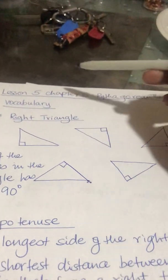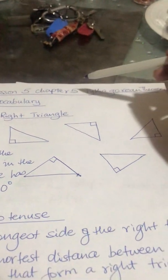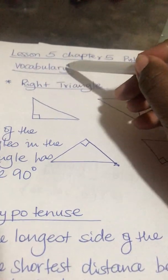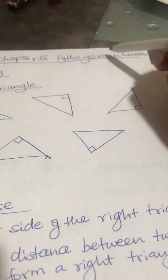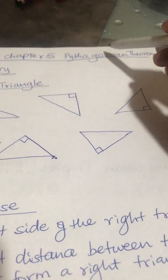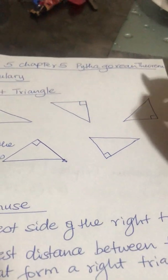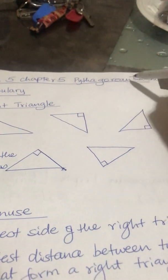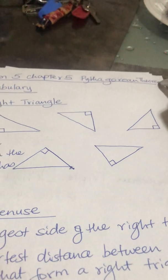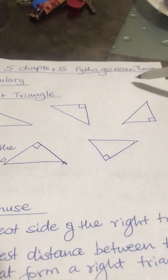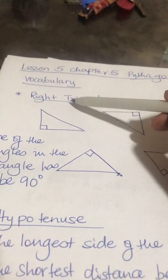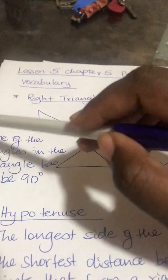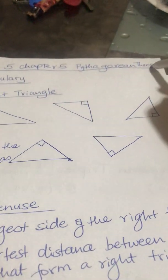Okay girls, lesson five, chapter five: Pythagorean theorem. We need to know the vocabulary. The Pythagorean theorem comes from the Greek mathematician Pythagoras, so he's the one who developed it. When you see the Pythagorean theorem, you can only use it with a right triangle — no other triangle.